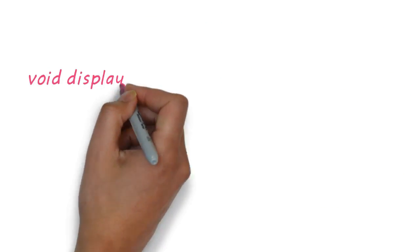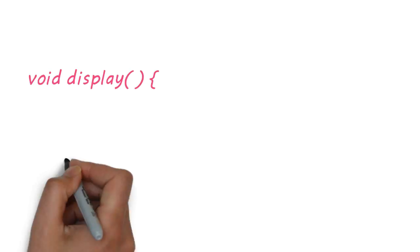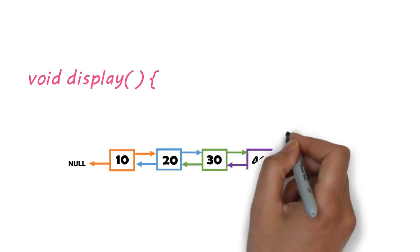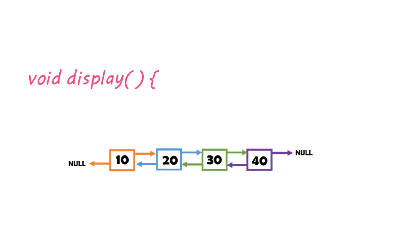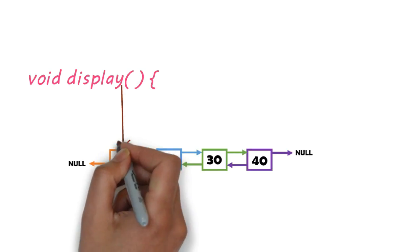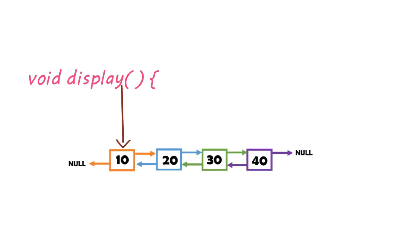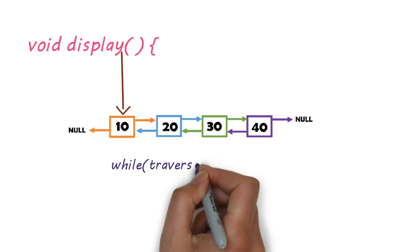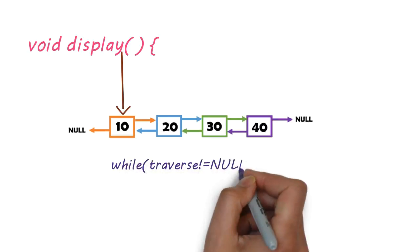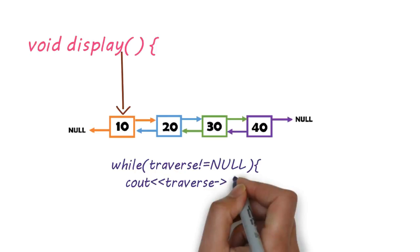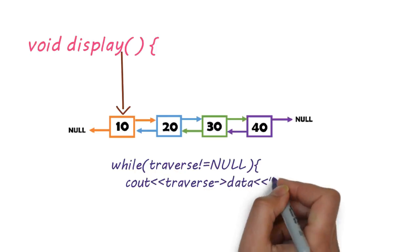Display is the easiest thing. We create a traverse pointer, use a loop to traverse from start to end, and output the data variable.